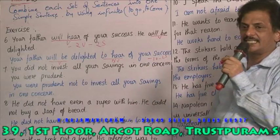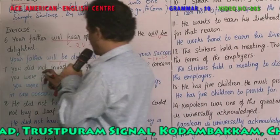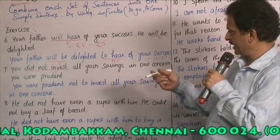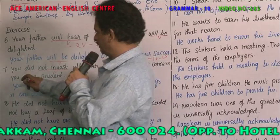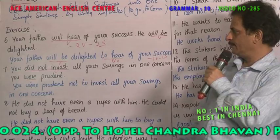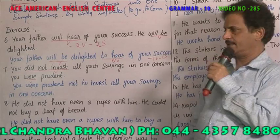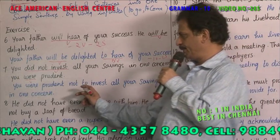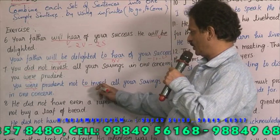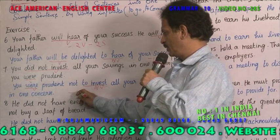Example 2: 'You did not invest all your savings in one concern' — a concern means a company. 'Did not invest' is the verb. 'You were prudent' — prudent means very intelligent. To combine: 'You are prudent not to invest all your savings in one concern.' 'To invest' becomes an infinitive — it is not a verb. So one verb, one sentence.